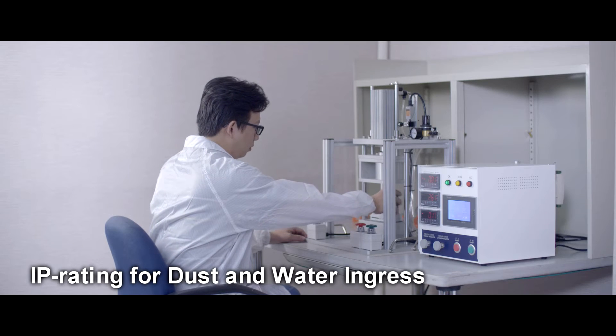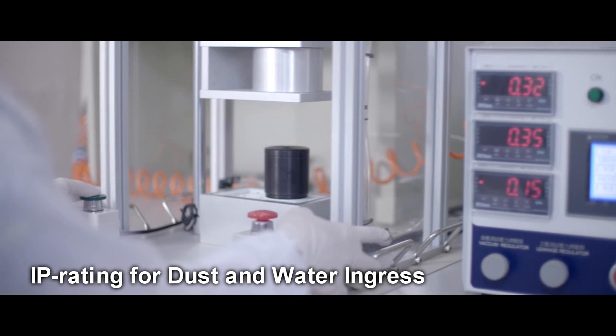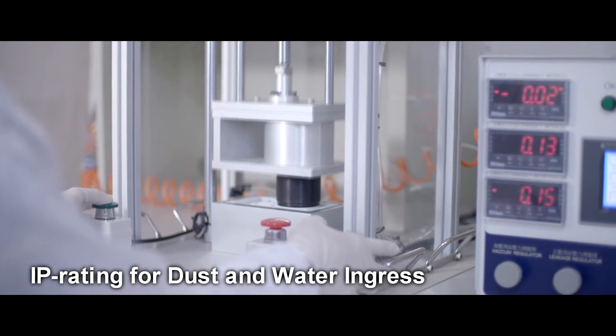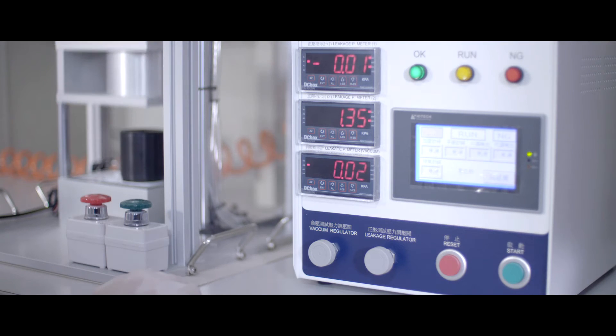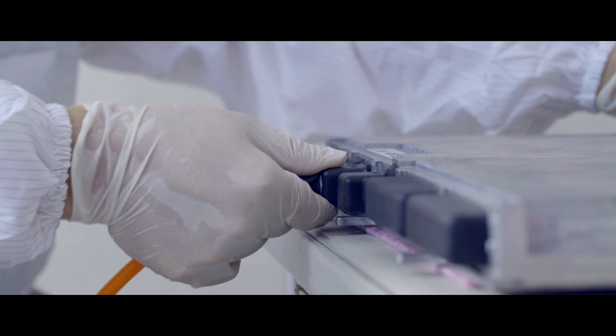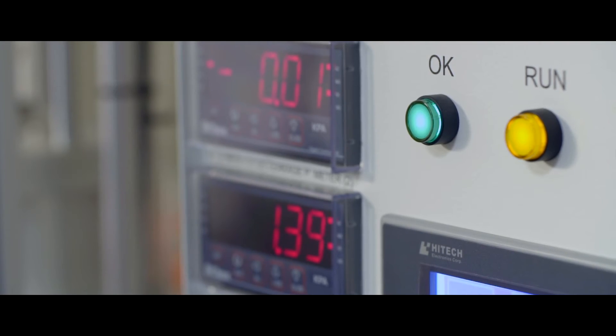Many systems require specific ingress or IP ratings to prevent dust and water ingress. This standard is verified by application of negative pressure up to 50 kPa for ratings of IP65, IP67 and IP68.